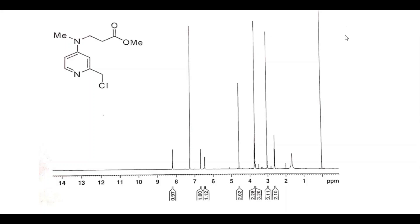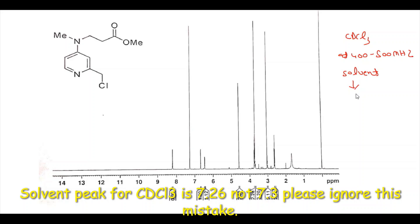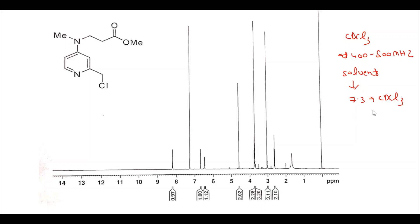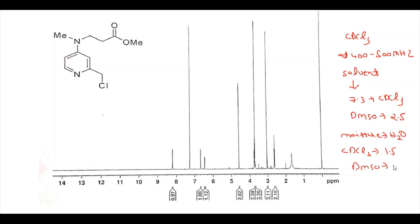First of all, this spectra was recorded in CDCl3 solvent at 400 to 500 MHz frequency. Apart from your desired peaks, there will be certain peaks which you have to keep in mind. The first peak is the solvent peak. Since it is recorded in CDCl3, there will be a corresponding peak at 7.3. For CDCl3 it is 7.3. But if you are recording the NMR spectra in DMSO, the solvent peak will be approximately 2.5. Apart from that, there will be a moisture peak — that is the H2O peak — approximately 1.5 for CDCl3 and approximately 3.3 for DMSO.